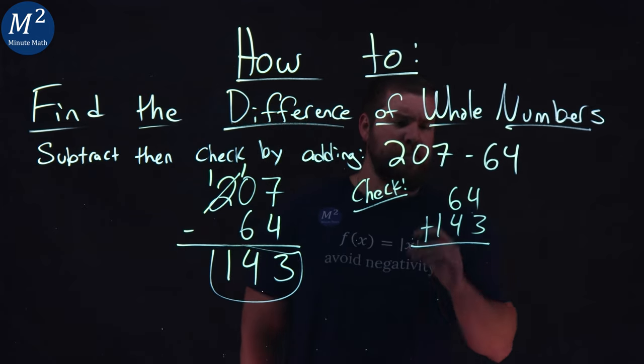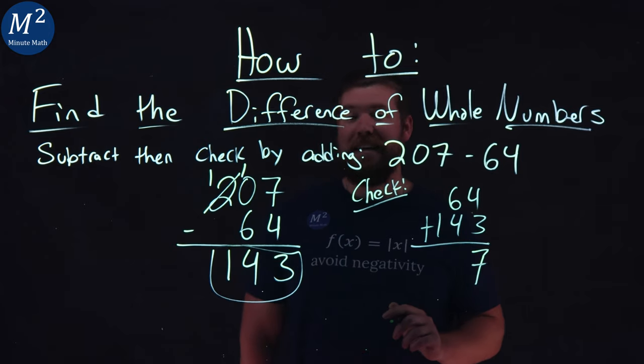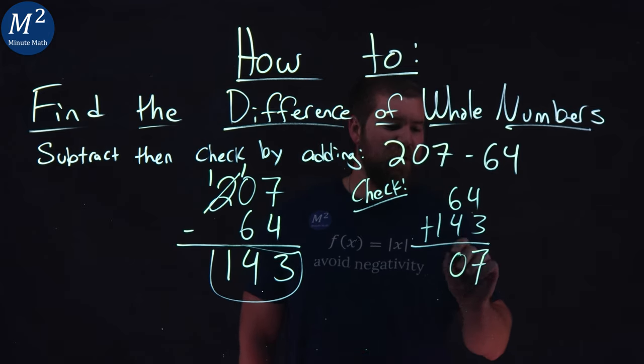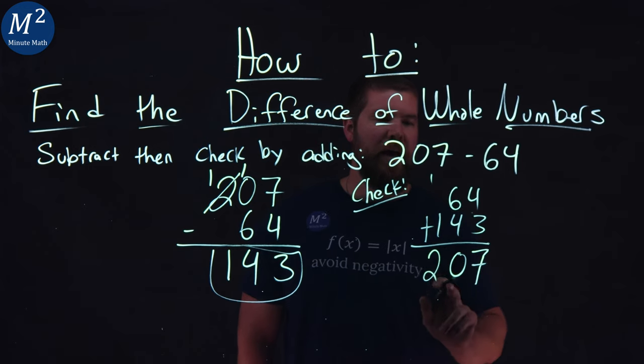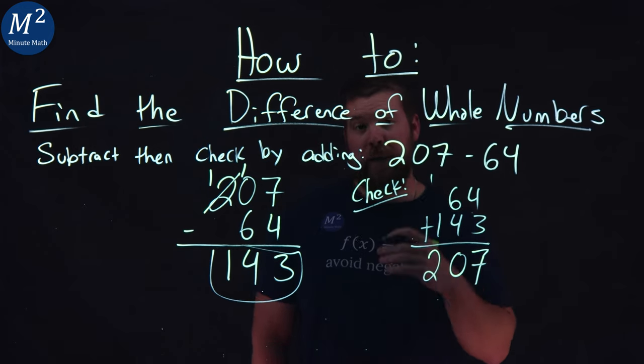Four plus three is seven. Six plus four is 10. Put a zero right there, carry the one. One plus one is two. And there we have it, 207 from the beginning.